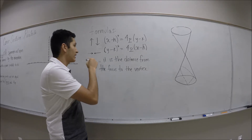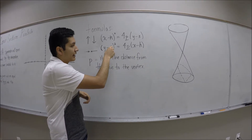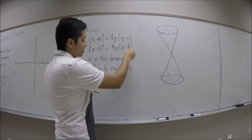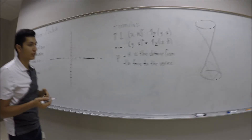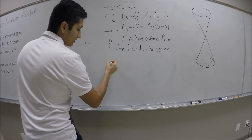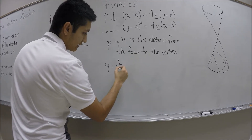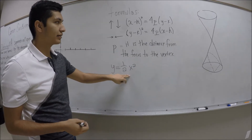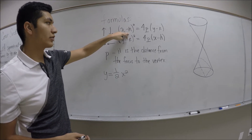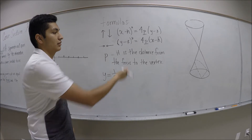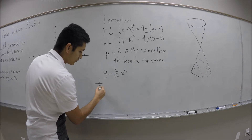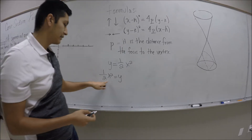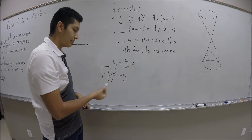To graph the equation x squared over 4 minus y squared over 1 equals 1, we recognize 4 as 2 squared and 1 as 1 squared. From the center — the point of origin — we go 2 to the right and 1 up, repeating this for all sides. Then we connect the corners to get our asymptotes.